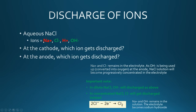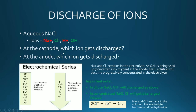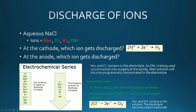Let's take a look at aqueous sodium chloride in a bit more detail. The ions present are sodium and hydrogen cations, and chloride and hydroxide anions. At the cathode, the cations are going to be attracted because they have opposite charge, but only one can actually be discharged. This is where the electrochemical series comes into play, because some ions have a lot more tendency to discharge than others — the lower down you are on the list, the more likely that ion will discharge. Hydrogen ions are lower down than sodium, so at the cathode you'll actually get hydrogen ions being discharged rather than the sodium ions.